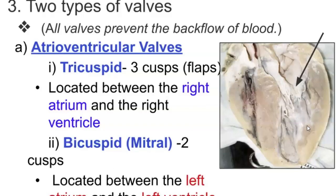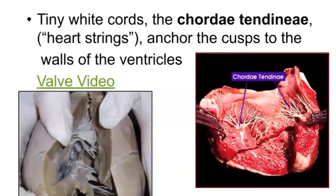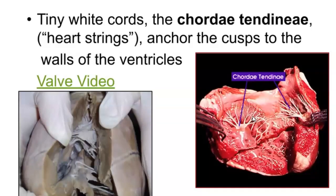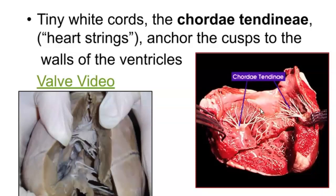The bicuspid is also called the mitral valve. Because the left side works under much more pressure, valve problems are more likely on the left — for example, mitral regurgitation, where blood occasionally flows back up when it should only go down. The valves are anchored by chordae tendinae — heartstrings — which anchor the valve flaps to the muscle wall. They pull down to let blood flow through, then release so the valves close back up.